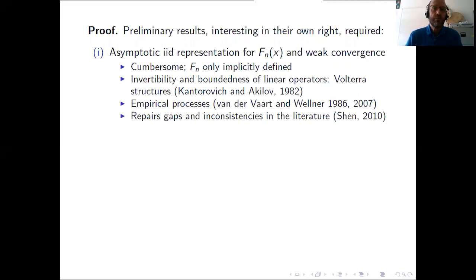And what about the proof? Okay we derive some preliminary results that are preliminary but are interesting in their own right. The first one is indeed an asymptotic uniform iid representation for the Efron-Petrosian estimator itself and its weak convergence and this is important because the estimator Fn has no explicit form so it is only implicitly defined. So we prove invertibility and boundedness of some linear operators appearing in the implicit representation of the estimator. We need to analyze some non-standard Volterra structures which are related to functional analysis and also we applied some technology from empirical processes.